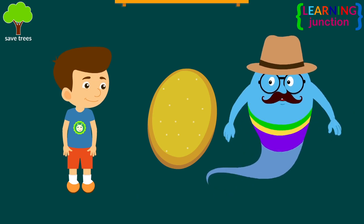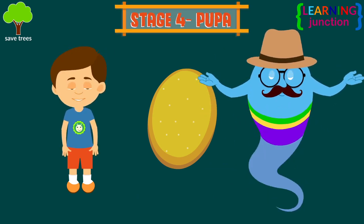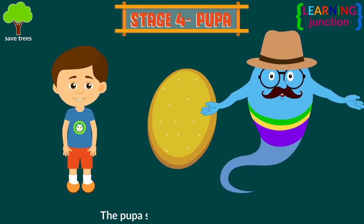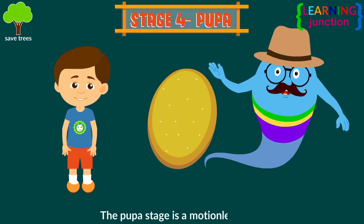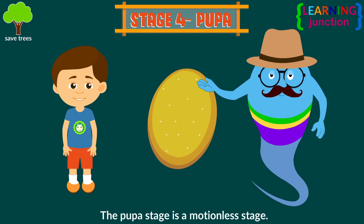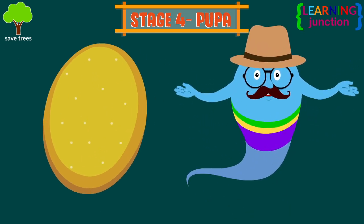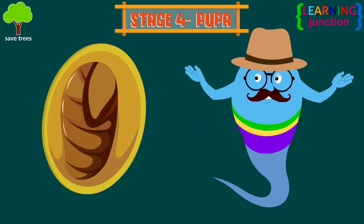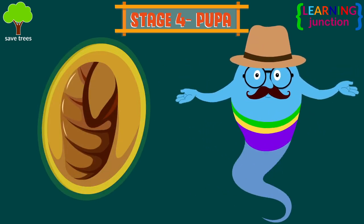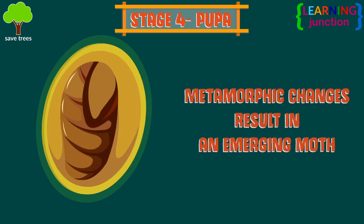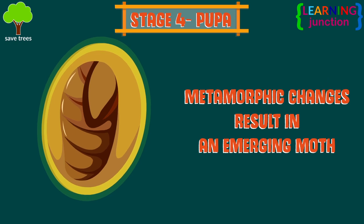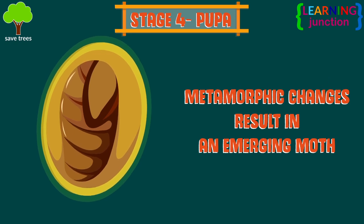Stage 4: Pupa. The pupa stage is a motionless stage. The silk cocoon serves as protection for the pupa. Metamorphic changes of the pupa result in an emerging moth.